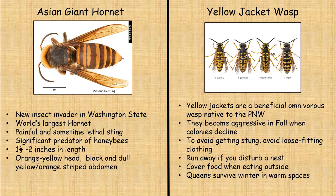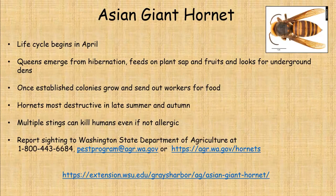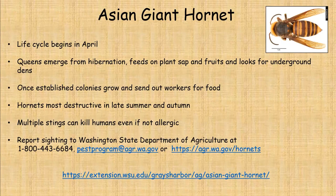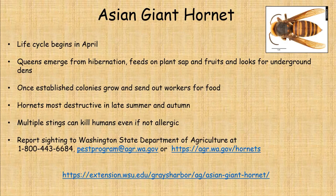Cover your food when eating outside as yellow jackets are attracted to food, especially meat. The queen survives the winter in warm spaces, so you might find one in your home, shed, or garage — she's just trying to overwinter. For the Asian giant hornet, the life cycle begins in April when the queen emerges from hibernation, feeds on plant sap and fruits, then looks for an underground den to start enlarging the colony. Once the colony is established and grows, she will send out workers for more food — and that's what we have to be careful of.